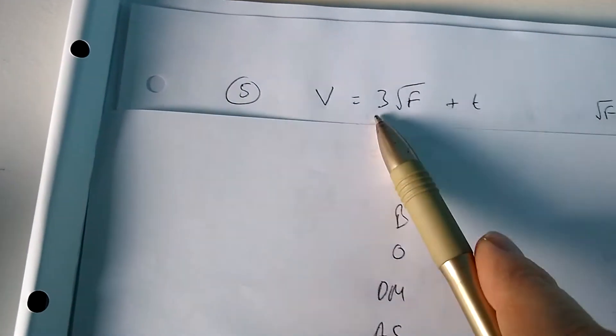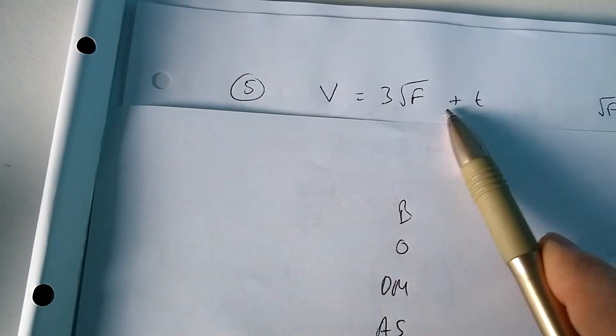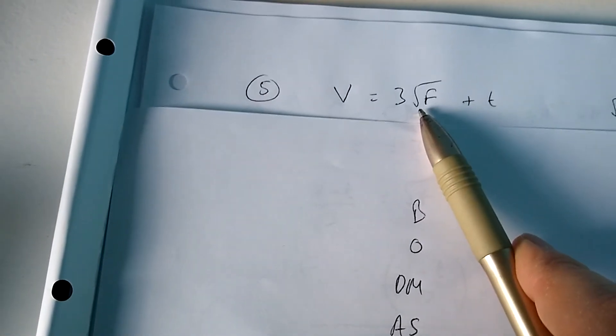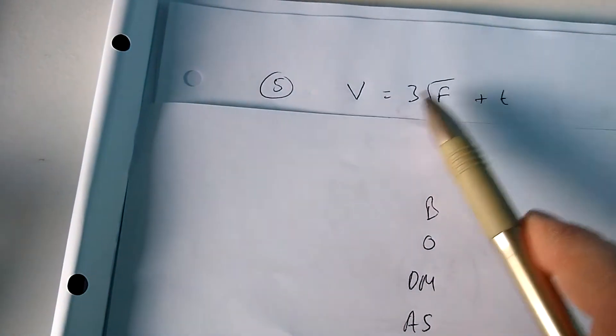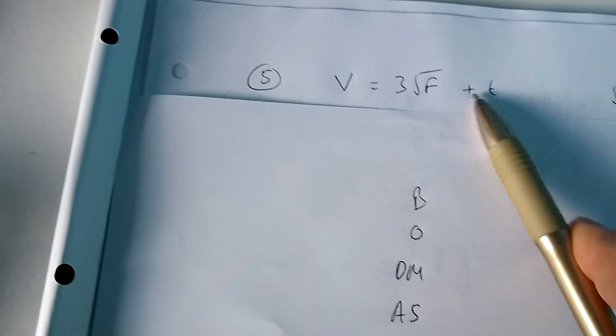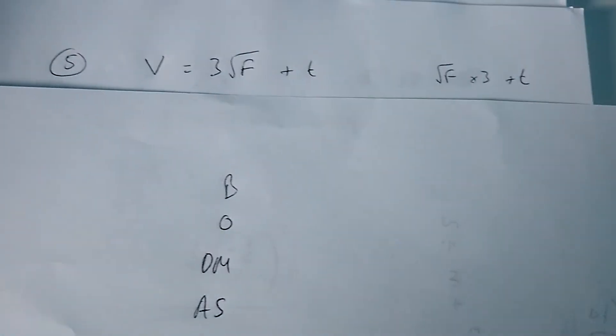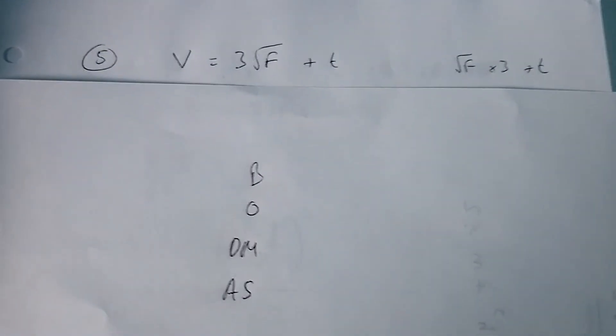So here we've got v equals three times the square root of f plus t. So what we're doing to f: we're square rooting it first, because it's powers or indices first, then multiplying by three, then adding on t. So those are the three mathematical operations we're performing on f.